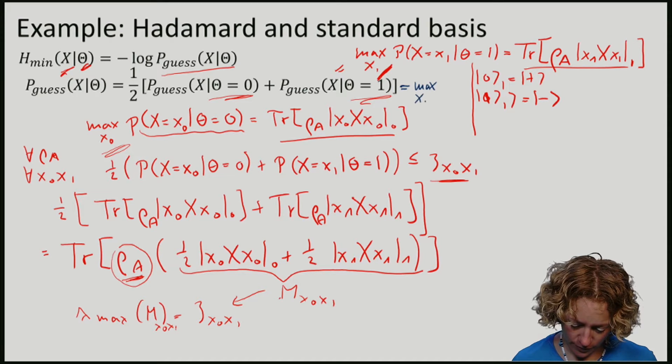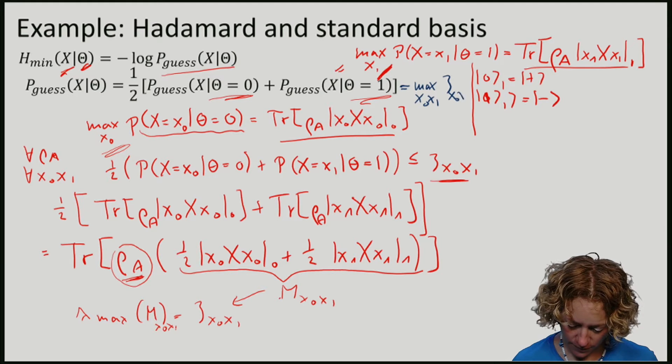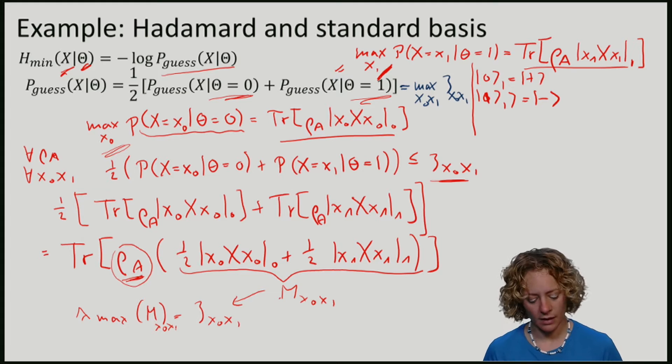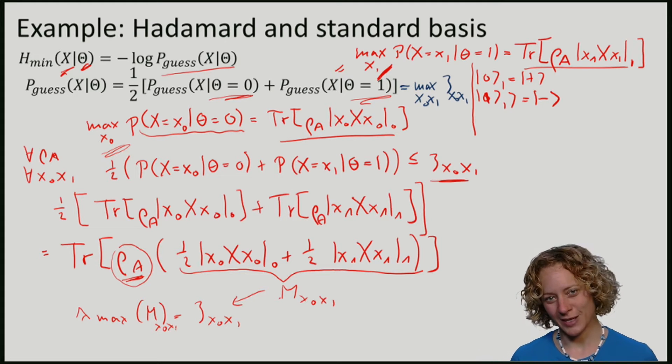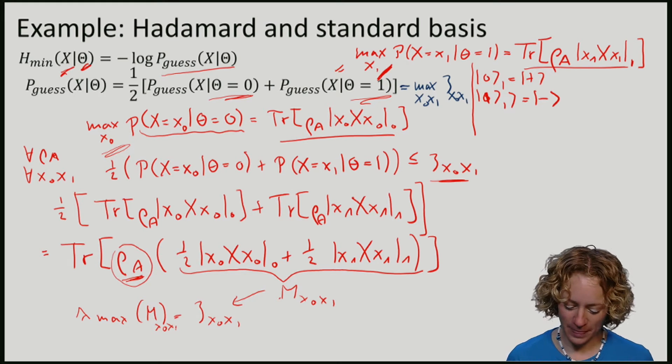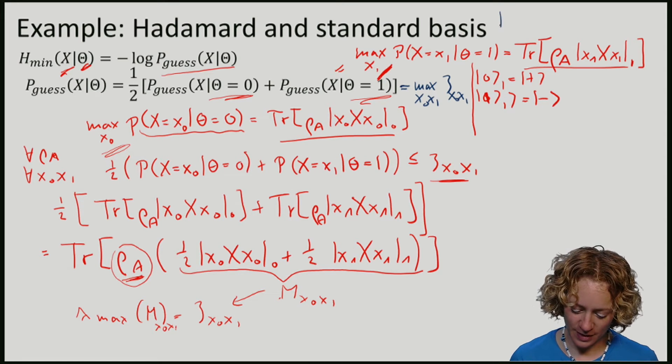Eve can be sure that this is equal to the maximum over X0, X1, of zeta X0 X1. Go and perform this calculation and convince yourself that what this maximum is, is exactly a guessing probability of X.